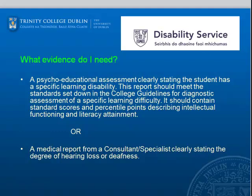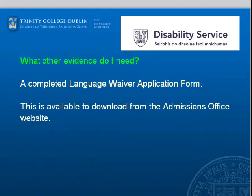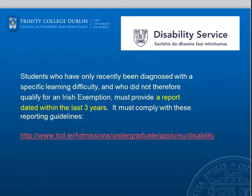Alternatively, a medical report from a consultant or specialist clearly stating the degree of hearing loss or deafness. You also need a certificate of exemption from Irish — this is Circular Letter M50/93 from the Department of Education, available from your school. You also need to complete a language waiver application form, available to download from the admissions office website. Students recently diagnosed with a specific learning difficulty who did not qualify for an Irish exemption must provide a report dated within the last three years that complies with reporting guidelines.